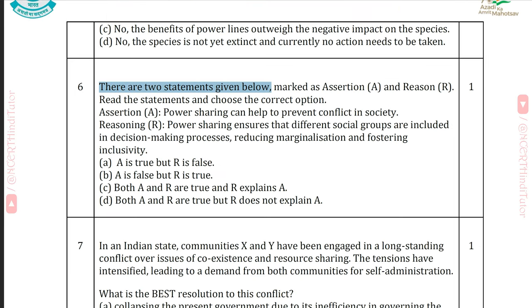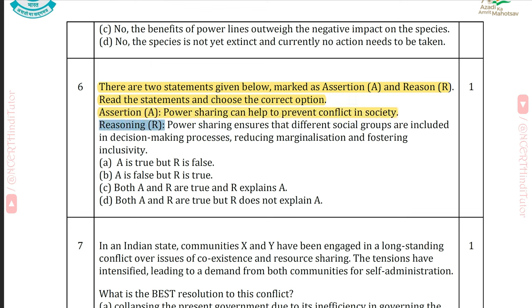Question 6: Assertion A — Power sharing can help to prevent conflict in society. Reason R — Power sharing ensures that different social groups are included in decision-making processes, reducing marginalization and fostering inclusivity. Answer: Both A and R are true and R explains A.